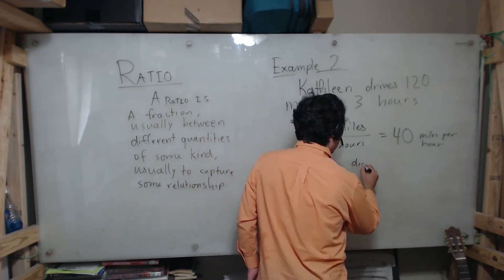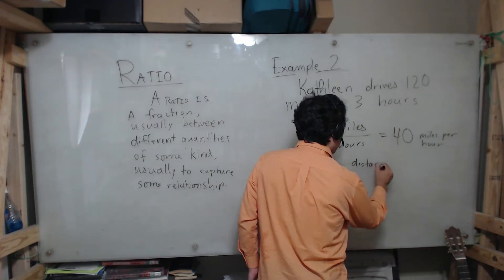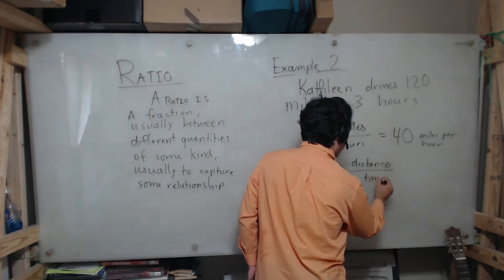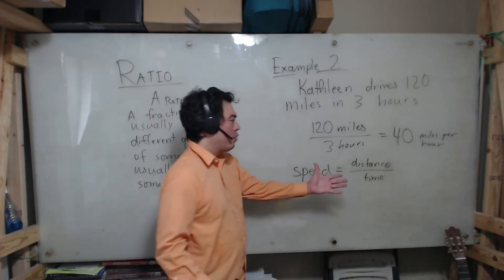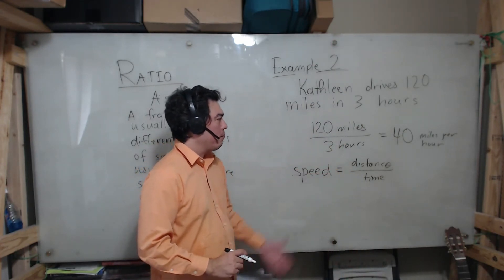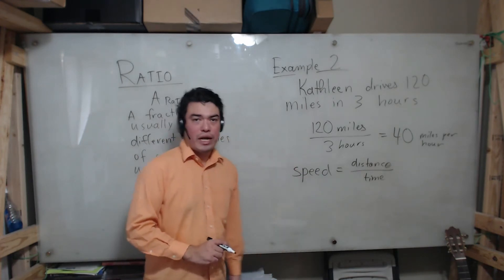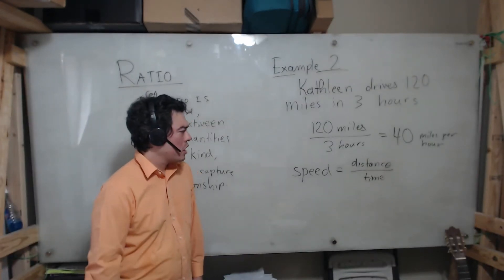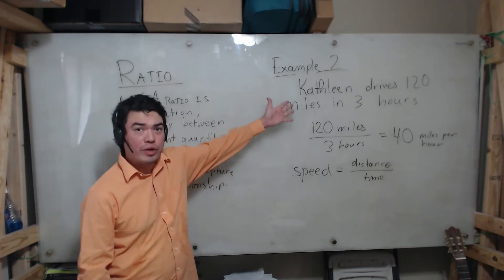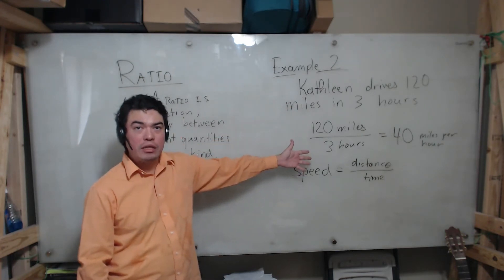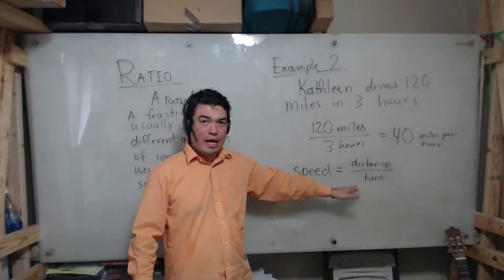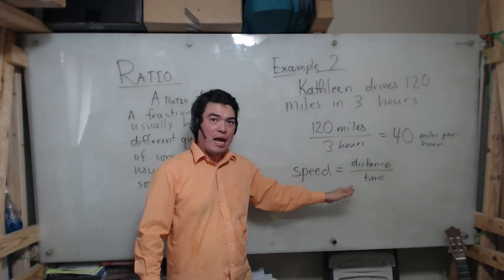We're going to see this kind of ratio problem occurring often in practical, real, in practical situations. Here you can see exactly how you can get a speed: you can divide how far someone drove by the time that they drove that distance and it'll give you their speed. We can see here that Kathleen was driving at 40 miles an hour, which in most places is a legal speed limit.